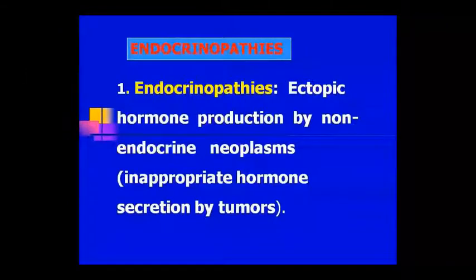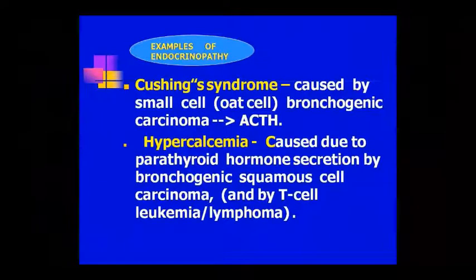What does endocrinopathy mean? Ectopic hormone production in a non-endocrine neoplasm. It means that if cancer is not in the endocrine gland, but occurs in another place, it will also produce ectopic hormone — meaning the secretion from the tumor is inappropriate. An example is Cushing syndrome, where small cell bronchogenic carcinoma causes increased ACTH production.